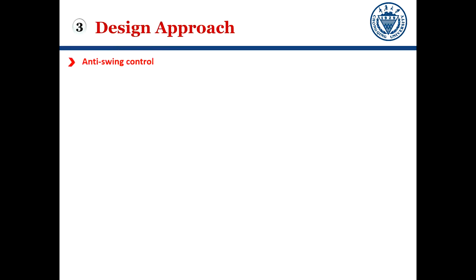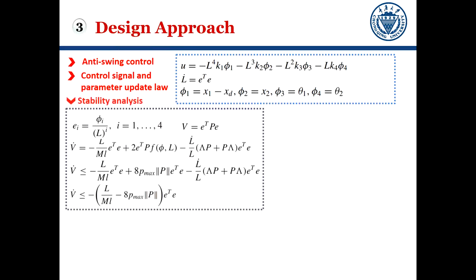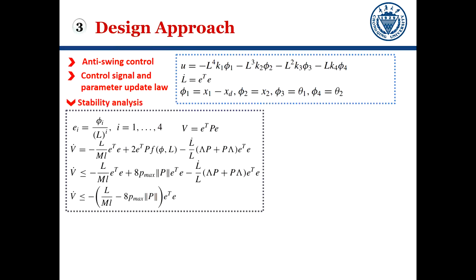Based on anti-swing control, the control signal and the parameter estimator for the load are designed as follows. It follows from stability analysis that the proposed scheme is effective for the under-actuated crane.